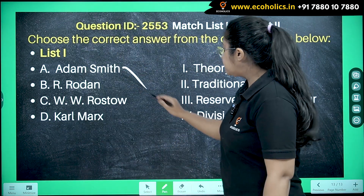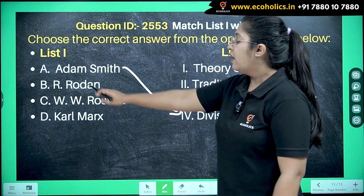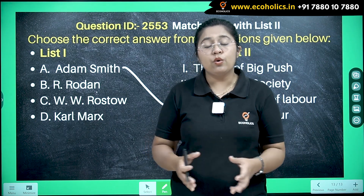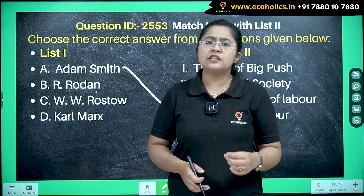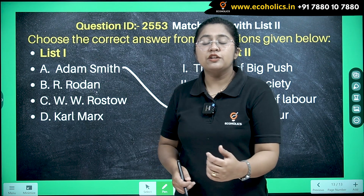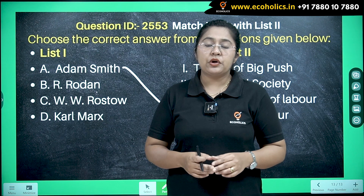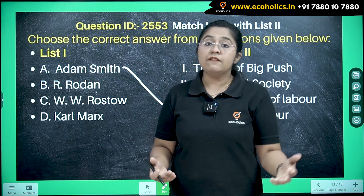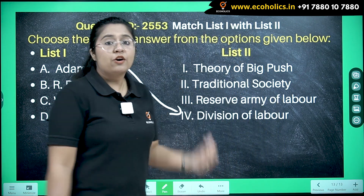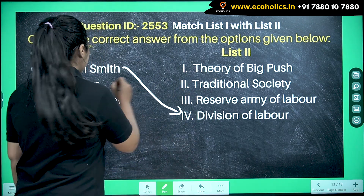The second economist is Rosenstein-Rodan, who is known for devising very important theories for underdeveloped countries — namely the Big Push Theory and the associated theory of balanced growth. These are very important theories wherein he talks about the various indivisibilities in underdeveloped countries. Against Rosenstein-Rodan in List 2 we already have the Theory of Big Push, so we can directly associate it.